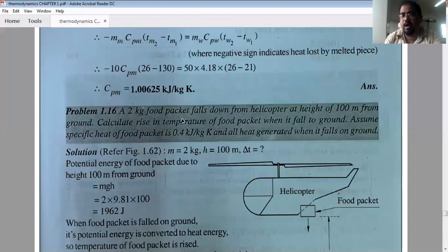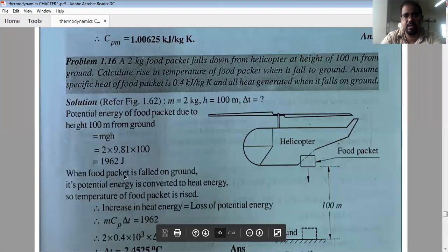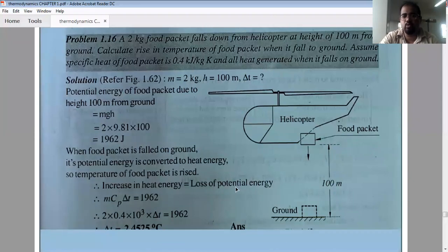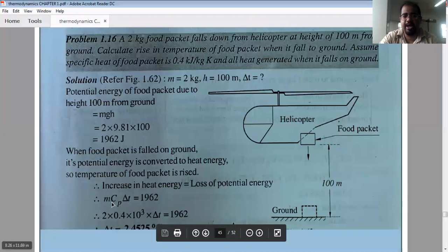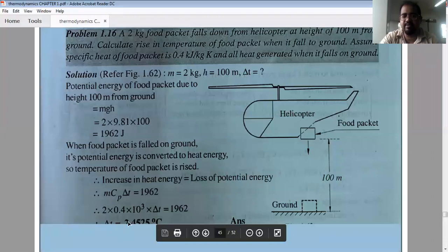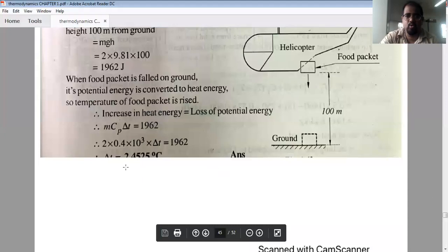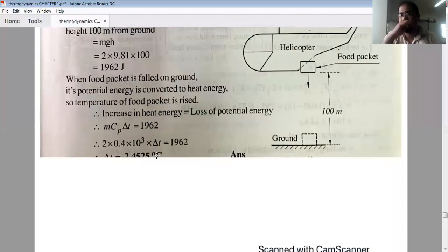So what is the potential energy? M into G into H. Now M into Cp into delta T. All the values: M into Cp into delta T equals 1962. So the potential energy M into G into H equals 1962. Now M into Cp into delta T equals 1962. So we can solve for delta T. As you can see, we have the values: M equals 2, this means that M into Cp into delta T equals 1962 gives us the temperature rise in degrees Celsius.